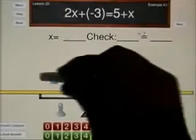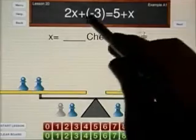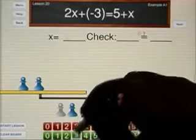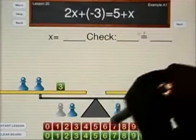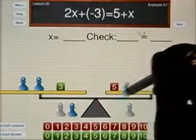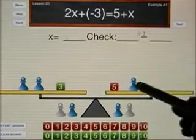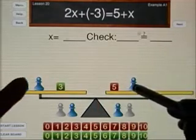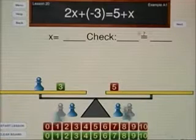Let's look at lesson number 20. I have 2x plus a negative 3, and on the right side I have a 5 plus x. So why don't we first of all remove a blue pawn from each side, and once we do that we now know how to solve this.